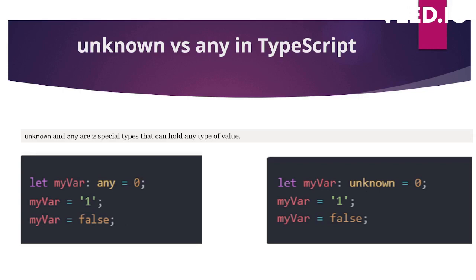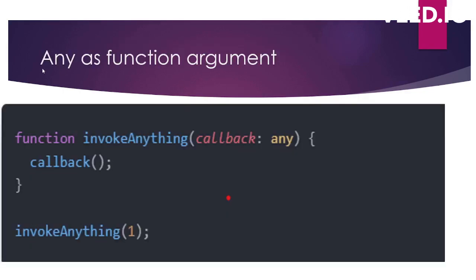Now let's understand the difference between these two. In this example, we are using any as a function argument. We have a function invokeAnything which has callback as an argument, and we have given any as the type of this callback. In line two, we are treating it as a function and calling this callback. We are calling invokeAnything and we can pass any type — boolean, string, any type. I have passed the number one, which is of type any, so this will not throw a type error.